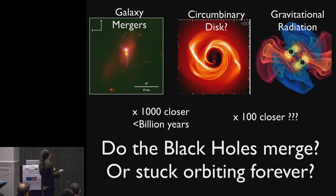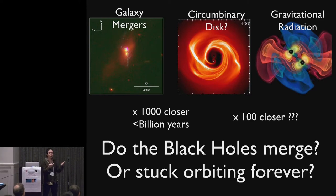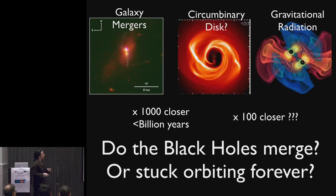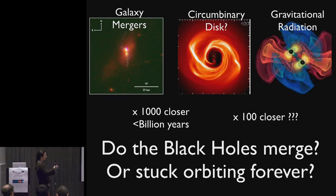And so then the question becomes, do they stall forever or is some other process able to bring them the factor of 100 closer that we need for gravitational radiation to take over? And this is called the final parsec problem, and it's been in the astronomical literature since 1980. So there's lots of ways you can imagine getting the black holes binary to harden.